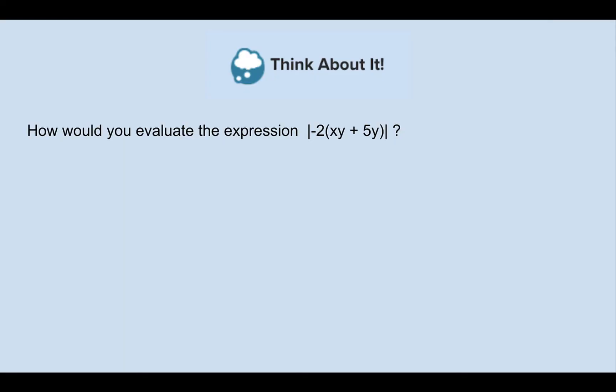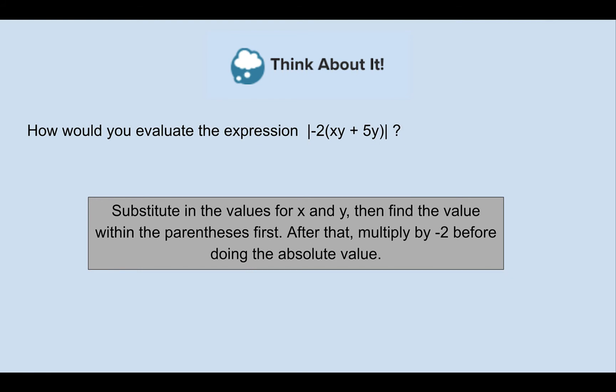Pause the video and write down your thoughts. How would you evaluate the expression of the absolute value negative 2 times the quantity xy plus 5y using the same values that we just did? Pause the video and write down your thoughts now. You should have thought something along the lines: you're going to still substitute in the values for x and y. Then you need to do parentheses first then multiply by negative 2. Finally once your absolute value is all simplified then you would do the absolute value and make whatever that value is positive.